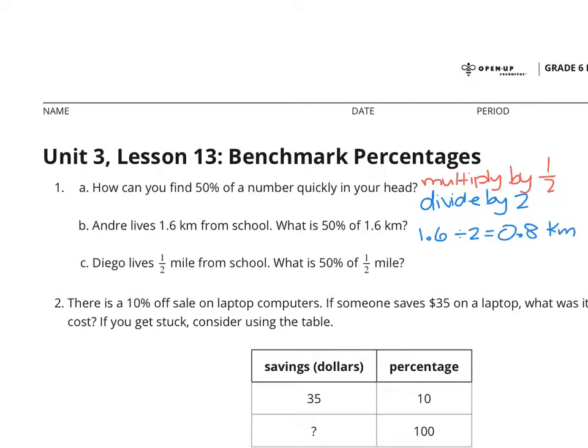Now in C, Diego lives half a mile from school. What is 50% of 1/2 mile? Well, let's multiply this by 1 half. And I think that's the quickest and easiest way to get there, to get to 1/4 of a mile. So with our benchmark percentage of 50%, you could either multiply by 1 half or divide by 2.